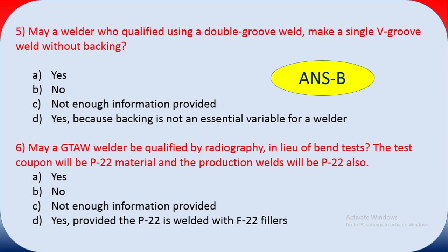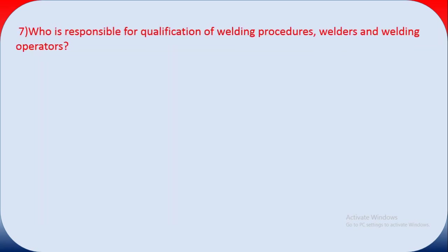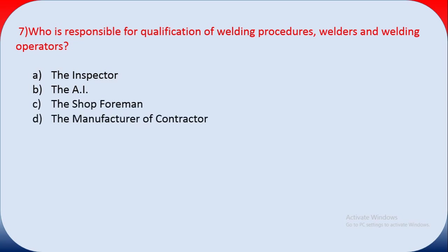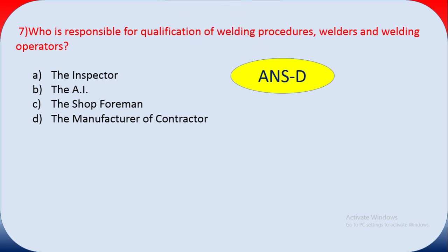Question seven: who is responsible for qualification of welding procedures, welders, and welding operators? Options include the inspector, the authorized inspection agency inspector, the foreman, and the manufacturer or contractor. The answer is D — the manufacturer or contractor is responsible for the qualification of welding personnel.